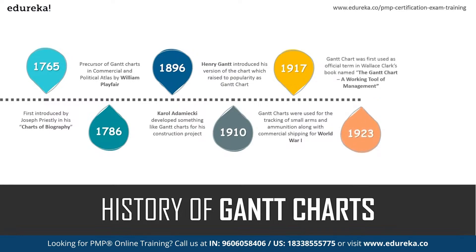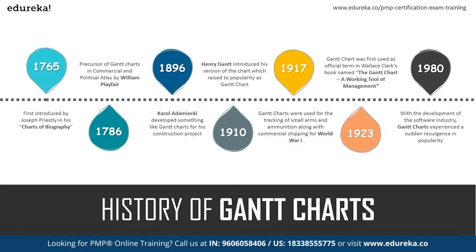The Gantt chart was first used as an official term in Wallace Clark's book named 'The Gantt Chart: A Working Tool of Management' during 1923. During 1980, with the development of the software industry, the Gantt chart experienced a sudden resurgence in popularity. Since Gantt charts provide visual representation, it is always easy to understand them correctly with less misunderstanding or misinterpretation. That clarity of visualization is the reason it has become more popular.